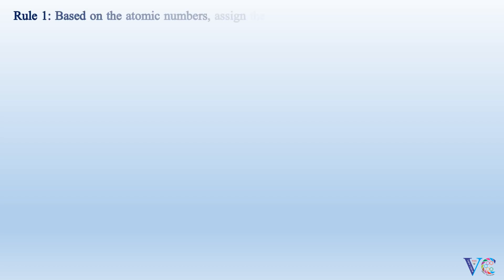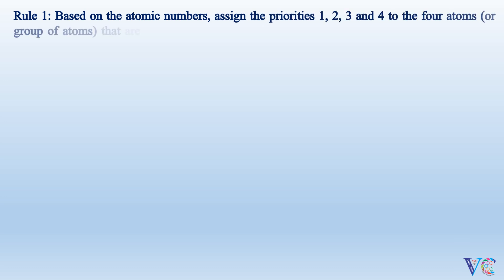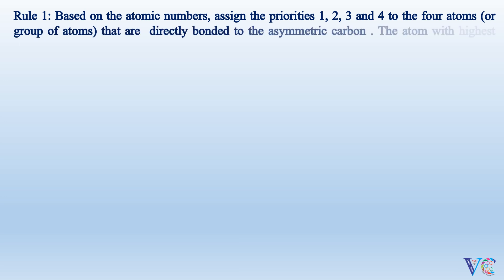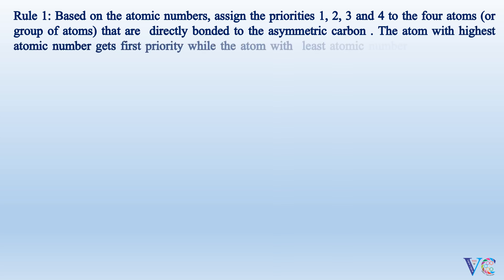Rule 1: Based on the atomic numbers, assign the priorities 1, 2, 3, and 4 to the four atoms or groups of atoms that are directly bonded to the asymmetric carbon. The atom with the highest atomic number gets first priority, while the atom with the least atomic number will have fourth priority.